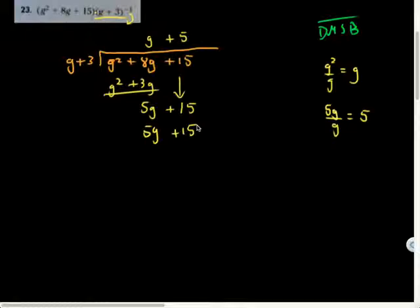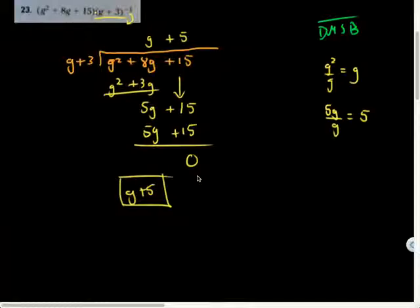Now multiply: 5 times g is 5g, 5 times 3 is 15, and subtract. My answer is g plus 5, no remainder. There's our first problem, hopefully you enjoyed it.